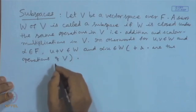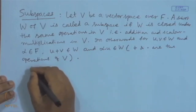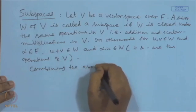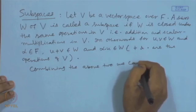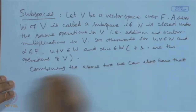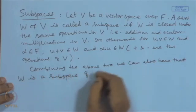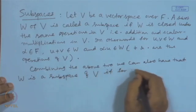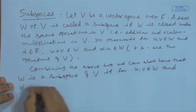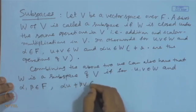One can also combine these two conditions and write them as a single condition: W is a subspace of V if for U, V belonging to W and scalars alpha, beta, alpha*U + beta*V belongs to W.